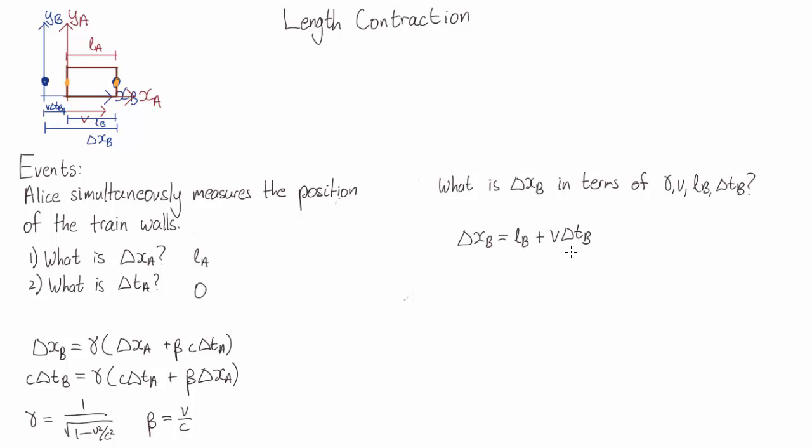Now we have two expressions for delta xb. We've got this one here and we've also got the Lorentz transform expression. Equating these two we get